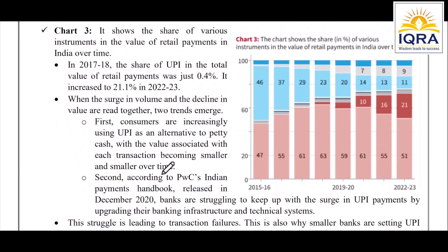Chart 3 shows the percentage share of various instruments in the value of retail payments in India over time — that is, how much amount is being paid using each transaction method. For UPI, it was only 0.4% of the value share in 2017–2018, but by 2022–2023 it had risen to 21.1% of the value share.